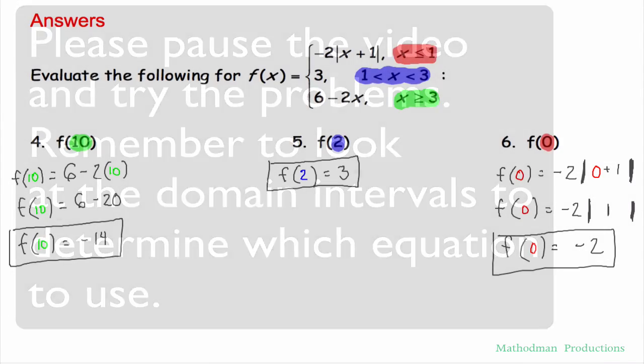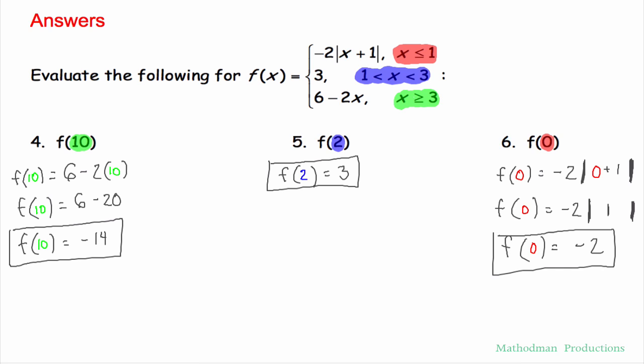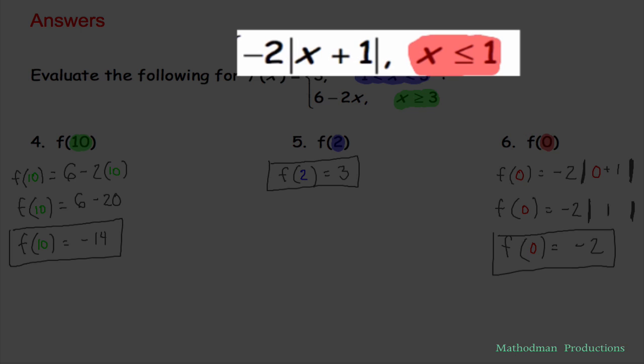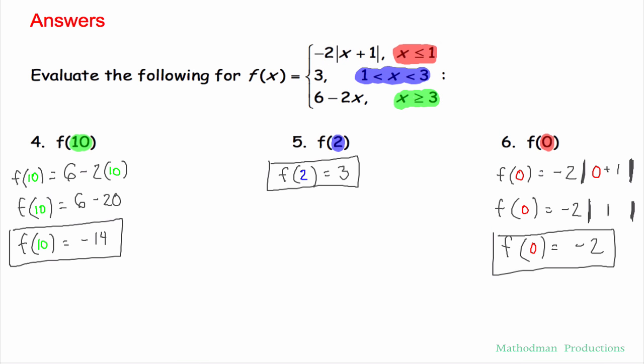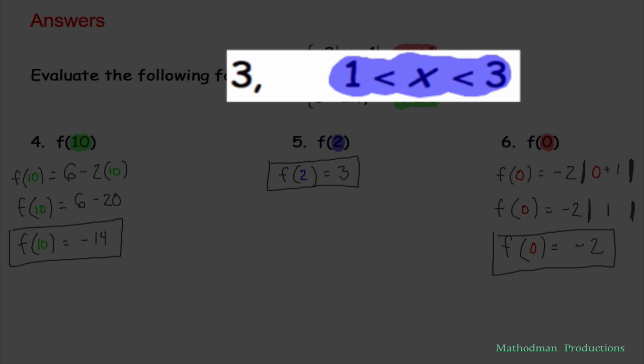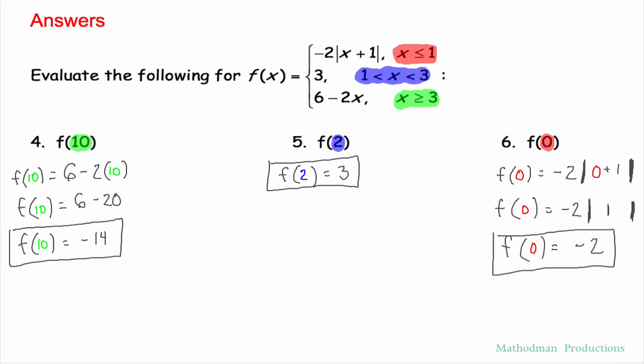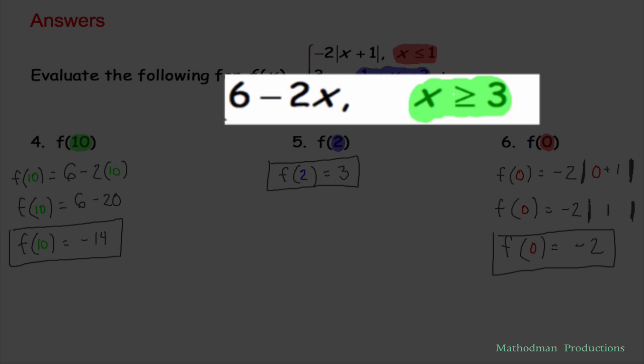Here are the answers. First thing I did was to color code my intervals. That way you know where to plug things into. First equation is used when your domain is equal to 1 or less. The second equation is when your domain is in between 1 and 3. And then the last equation is when your domain is more than or equal to 3.